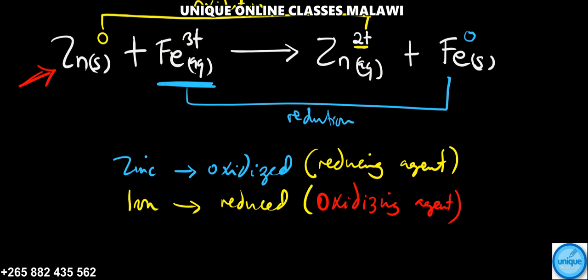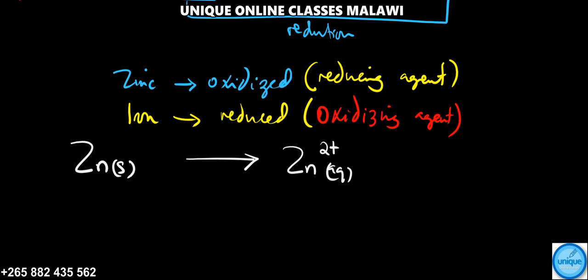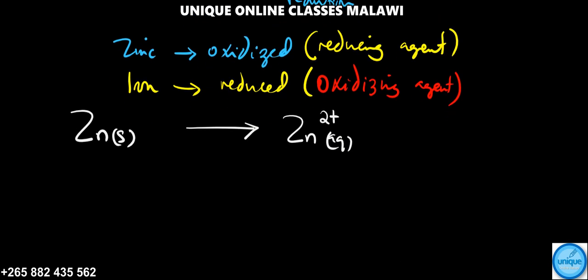Let's write the oxidation half equation. Zn in solid state gives Zn²⁺ aqueous. We need to balance the number of electrons. When the oxidation number is zero on the left, on the right hand side we need to add two electrons. So this is the oxidation half equation.